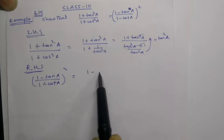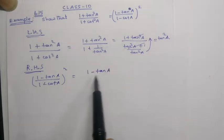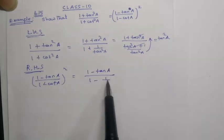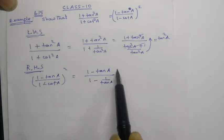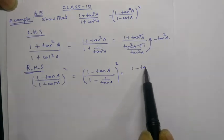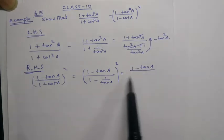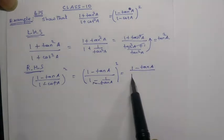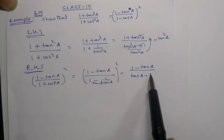Write cot A as 1 by tan A. So the denominator becomes 1 minus 1 by tan A, whole square.